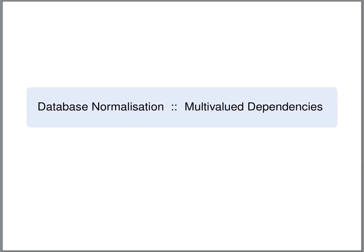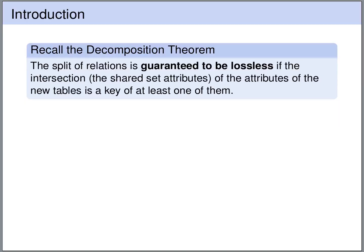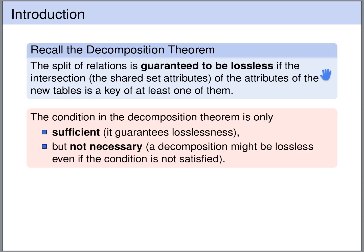We've seen that functional dependencies play a central role in the theory of relational databases. Multivalued dependencies are a generalization of functional dependencies. Recall the table decomposition theorem: the decomposition of a relation is lossless if the set of shared attributes of the new tables is a key of at least one of the new tables. This theorem gives us a sufficient condition for a lossless split.